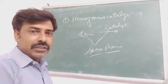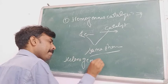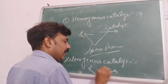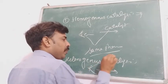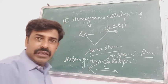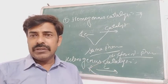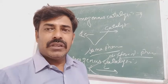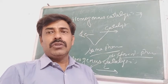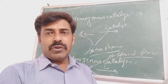The second type of catalysis is heterogeneous catalysis. In heterogeneous catalysis, the reactant and catalyst are in different phases. That means if one is in the gaseous phase, the second one may be in the solid phase. If one is in the liquid phase, the second one may be in the solid phase. So there are two types of catalysis in this classification based on state of matter: homogeneous catalysis and heterogeneous catalysis.